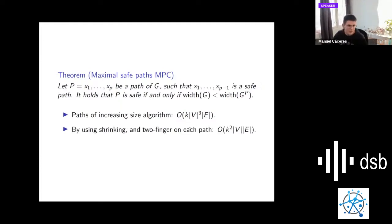With this simple approach, using the minimum path cover algorithm instead of shrinking, we can obtain this time complexity. But we can again use this idea of shrinking, computing this width more efficiently. Also noting that in the first solution, there are at most a linear time of maximal solutions. We can compute them all with a two-finger path. We obtain an algorithm that runs in order k squared times V times E.